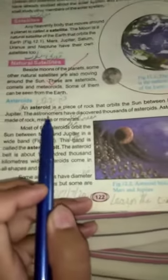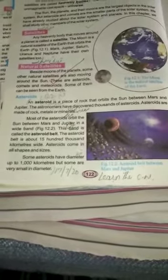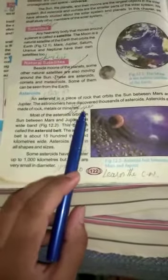Astronomers have discovered thousands of asteroids. Asteroids are made of rock, metals or minerals orbiting the Sun between Mars and Jupiter in a wide band.